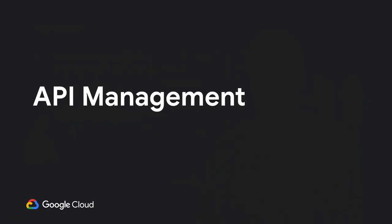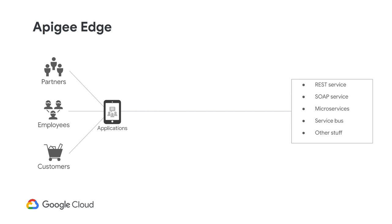Let's talk about API management. Consider a scenario: you've got some services on the right-hand side — REST services, SOAP services, microservices, maybe a service bus. On the left, you've got partners, employees, customers, and their applications that need to get data from these services. There's a need to control what those applications can do, how they access data, and how frequently. That's where API management comes in — that's where Apigee Edge fits in.